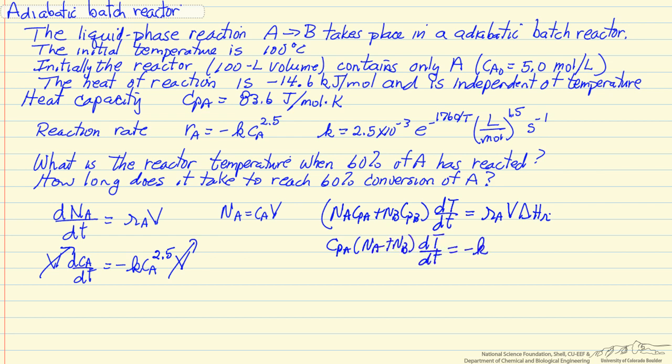On the right side I have the rate constant, the concentration, volume, and the heat of reaction. Na plus NB is just equal to the number of moles of A initially. The reactor did not contain any B, so I can write this as Na0, the heat capacity of A, and then this change in temperature with time. The right side hasn't changed.